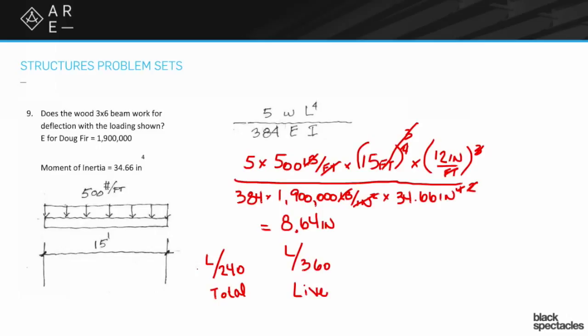It'll tell you either for the total load or for the live load and give you one of those numbers. What that's essentially saying is that the total length divided by 240 is the sort of allowable deflection that you're going to be able to go for before it starts to crack.